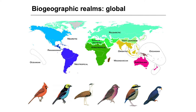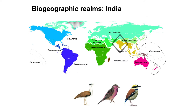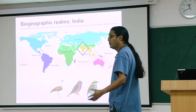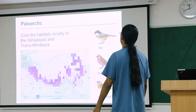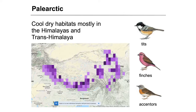India overlaps three realms: the Oriental, the Saharo-Arabian, and the Palearctic. The Indian subcontinent is at the confluence of three biogeographic realms, which is why we see such diversity of bird species — contributions from all three realms. Palearctic species prefer cool, dry habitats. Species like Tits, Finches, and Accentors, broadly restricted to the Trans-Himalayas or northern Himalayas, are Palearctic species that have come in from the North.